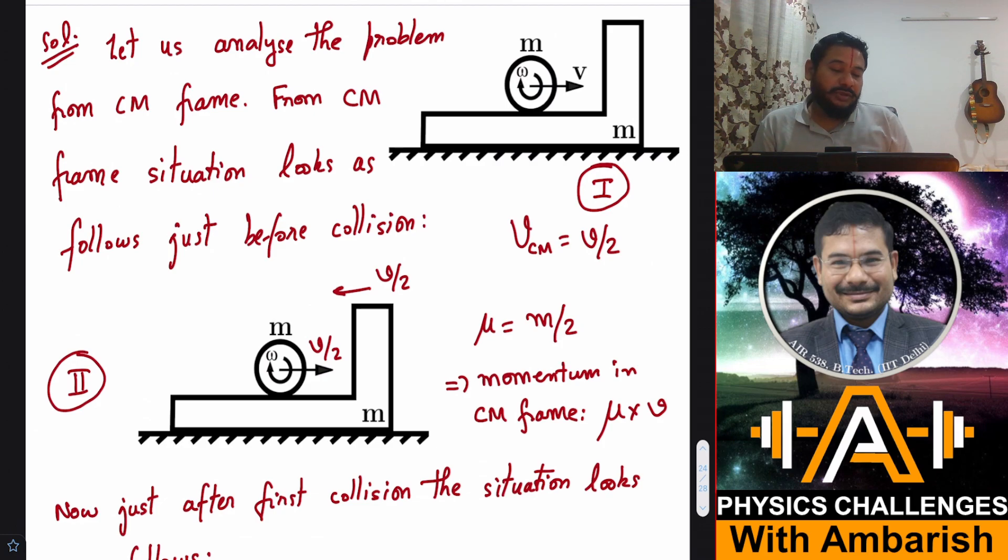What does the situation look like? The momentum in CM frame is given as μ times v_rel, where v_rel is the velocity of one body relative to the other and μ is the reduced mass. In our case, reduced mass is m times m upon (m + m), that is m/2. Relative velocity is simply v, so momentum in the CM frame is μ times v. Therefore velocity in CM frame will be momentum divided by mass, so that is v/2. From CM frame, this is also moving with v/2 velocity and this is also moving with v/2 velocity before collision.